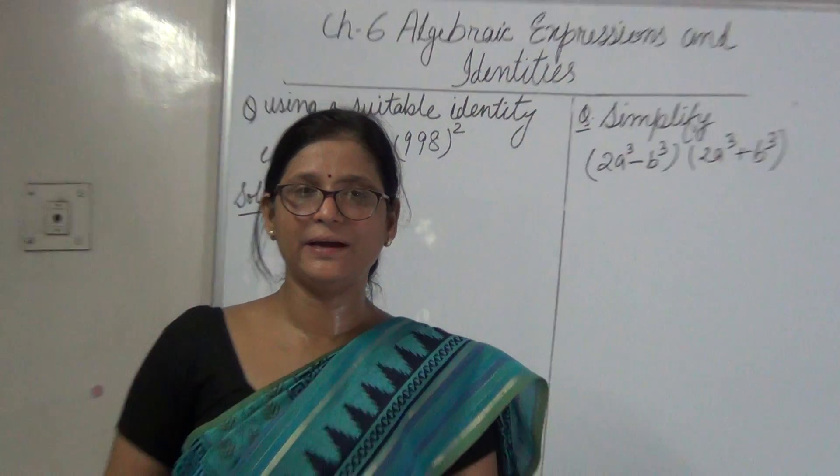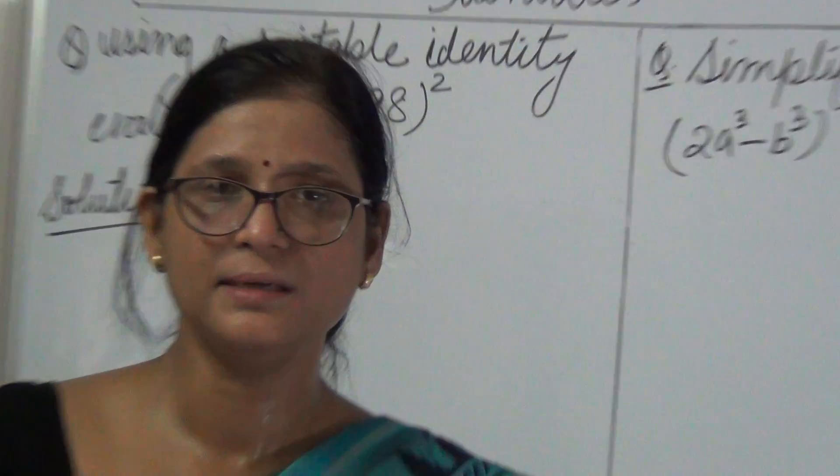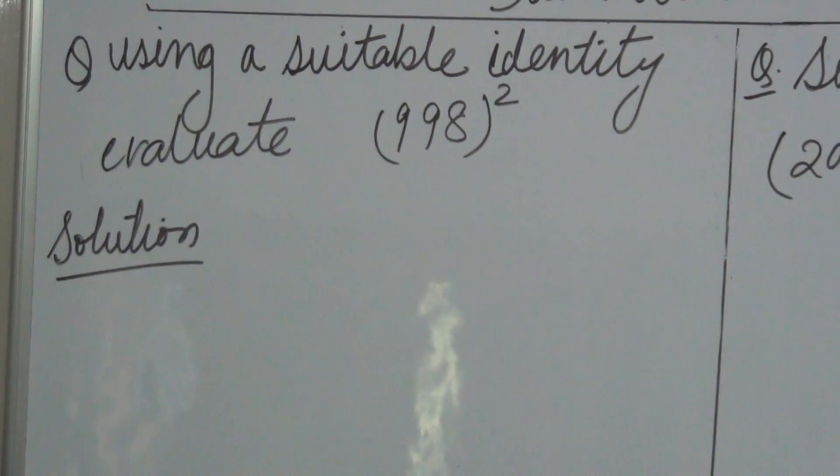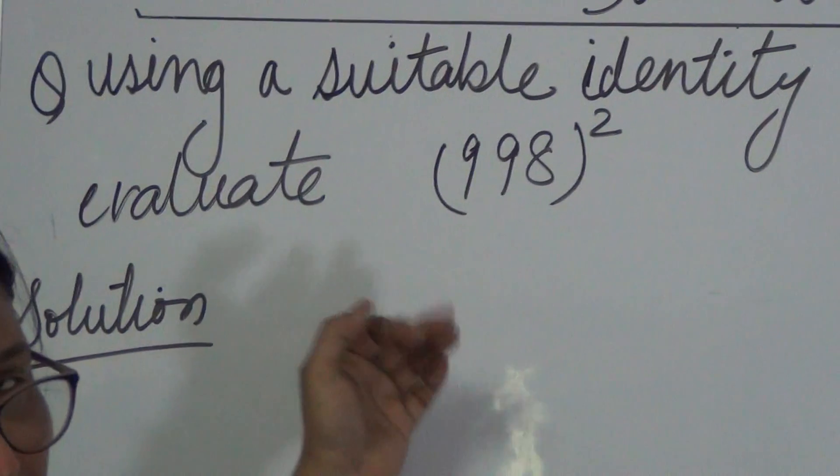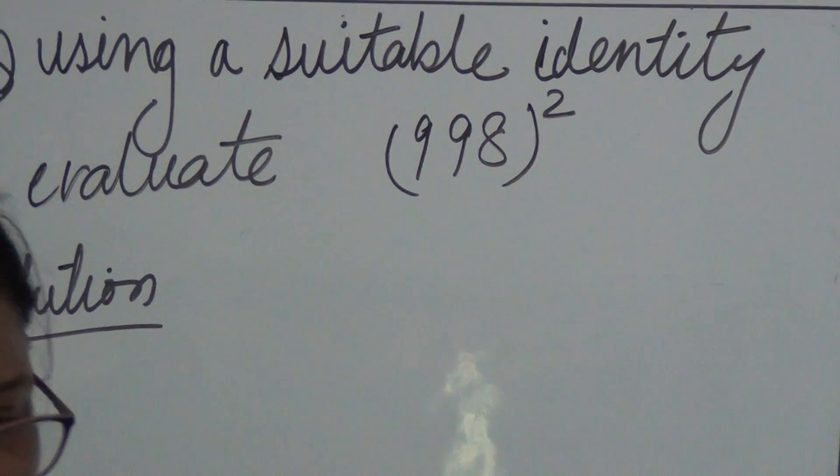Identities can be used for finding square of big numbers. Let us learn a sum here. Using a suitable identity, evaluate 998 whole square.